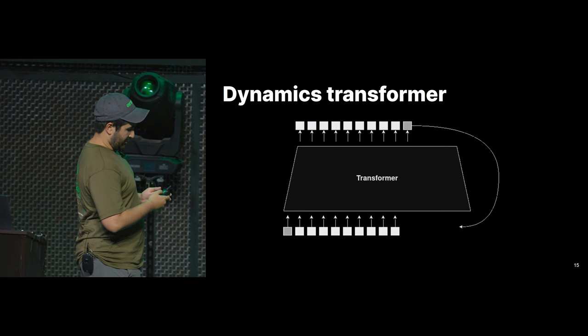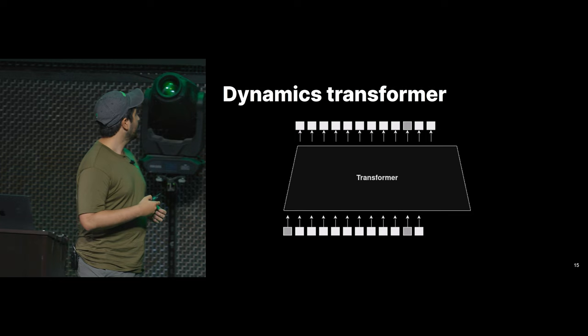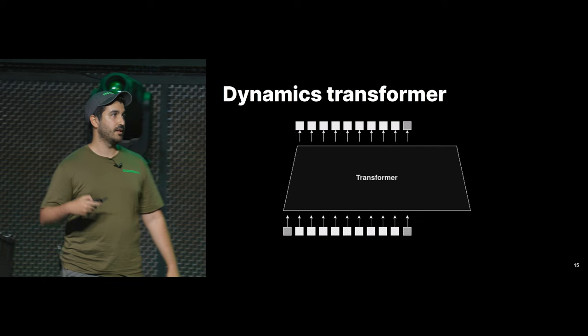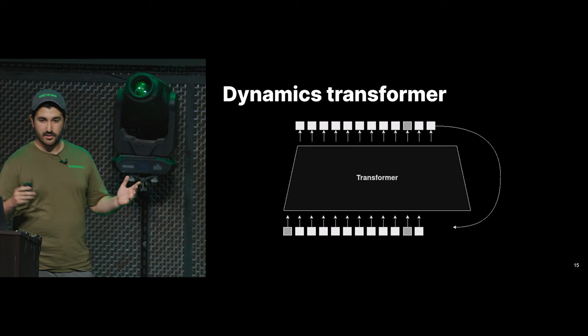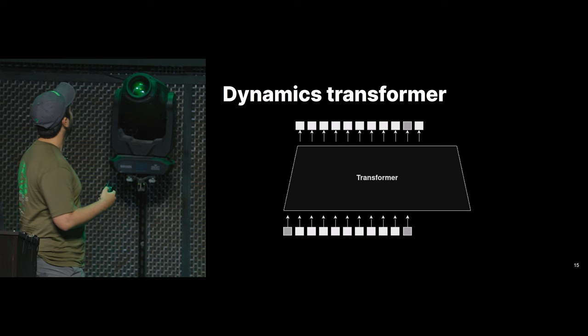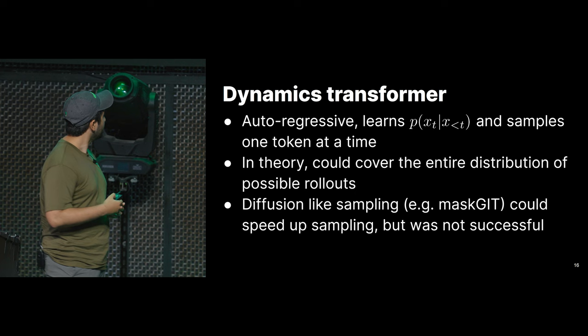We use this dynamics transformer with autoregressive sampling — one token at a time. At each step we ask the model what the next token will be, take that token, plug it back into the inputs, and ask again. We do this until we reach a number of tokens that give us a frame, then repeat for as many frames as we want. This is what people usually refer to as autoregressive sampling.